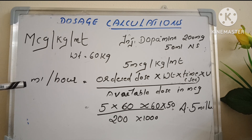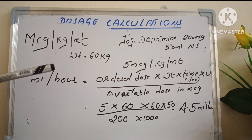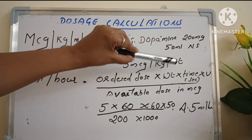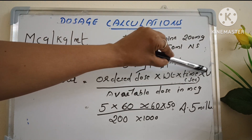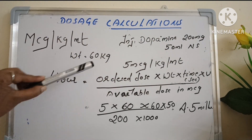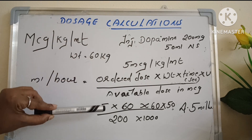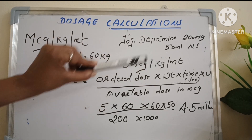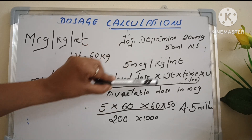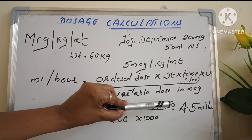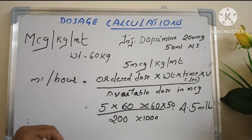We can calculate ml per hour — that is how many ml per hour the patient has to get. ml per hour is equal to ordered dose multiplied by weight of the patient multiplied by time multiplied by volume, divided by available dose in microgram. Ordered dose is 5 microgram per kg per minute. 5 multiplied by weight of the patient, which is 60, multiplied by 60 minutes for 1 hour, multiplied by 50 ml volume.